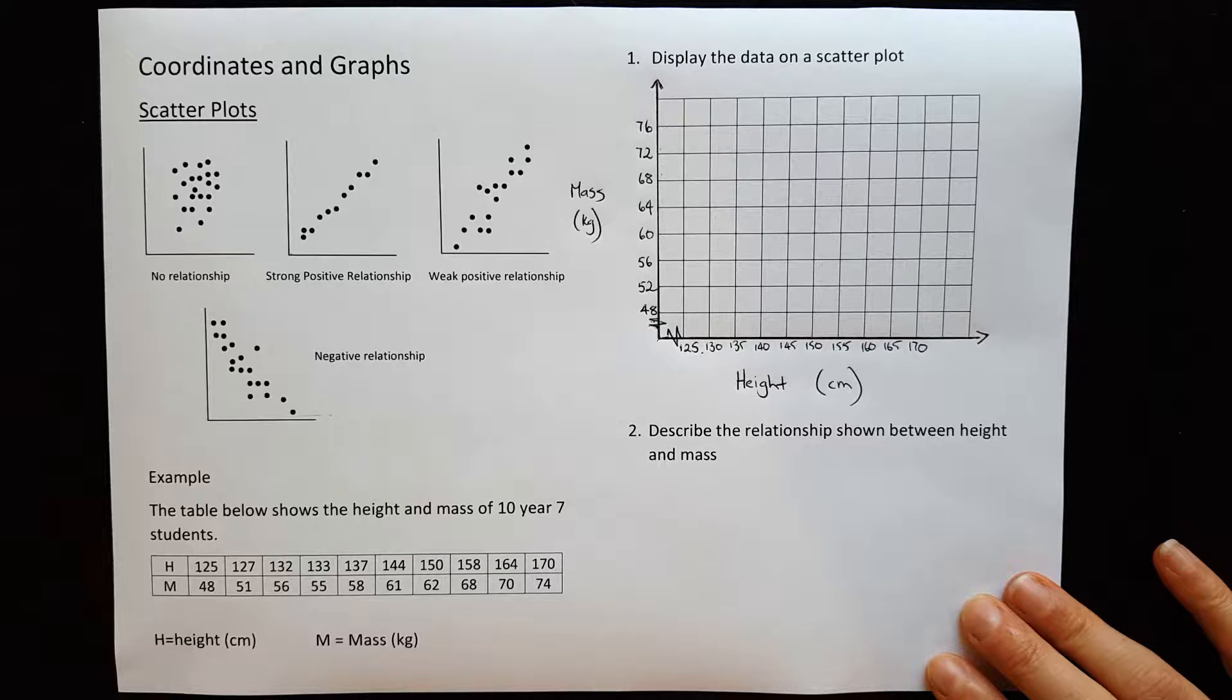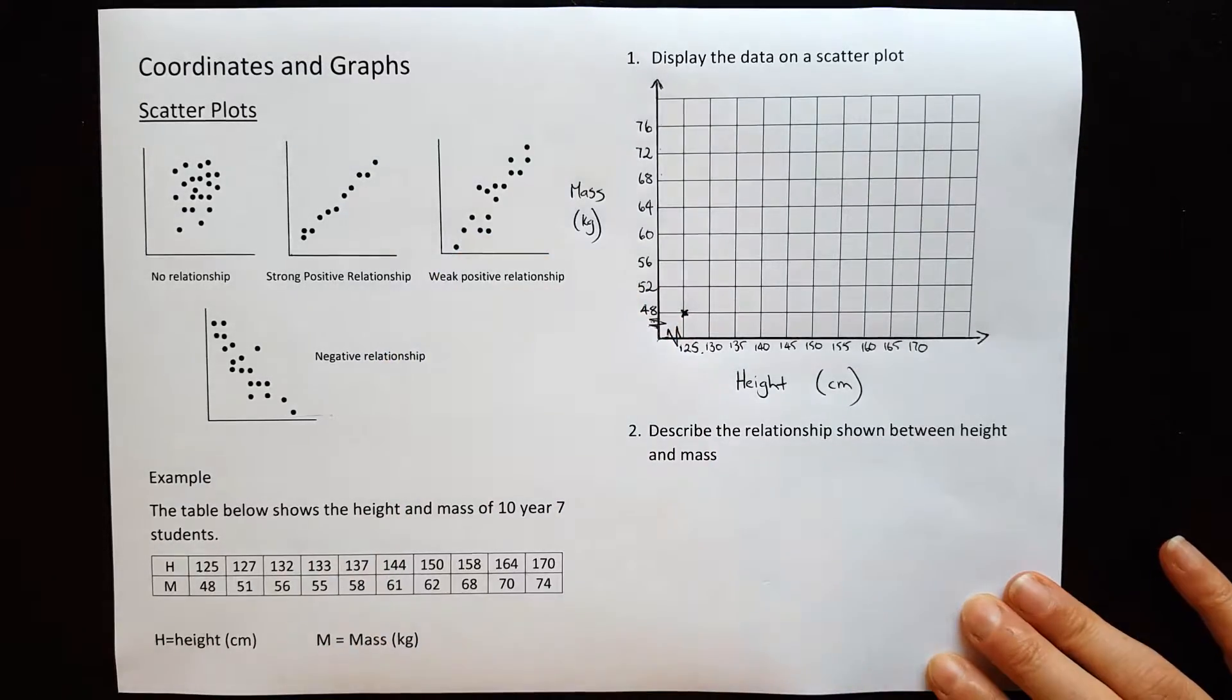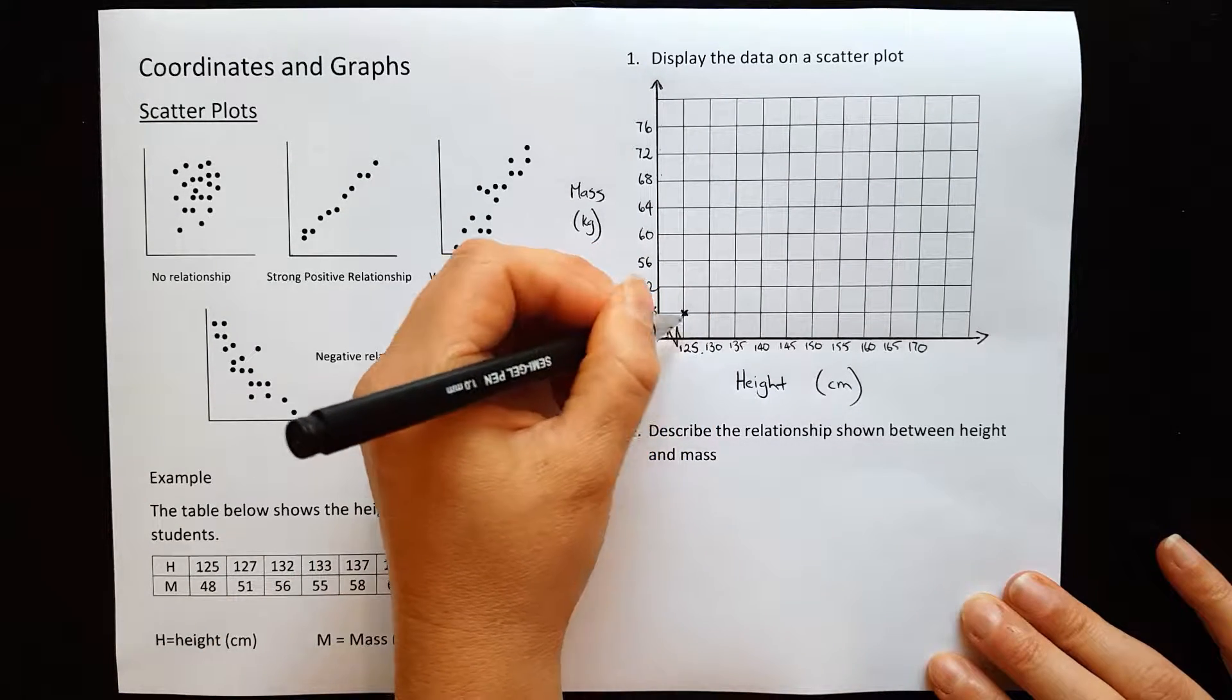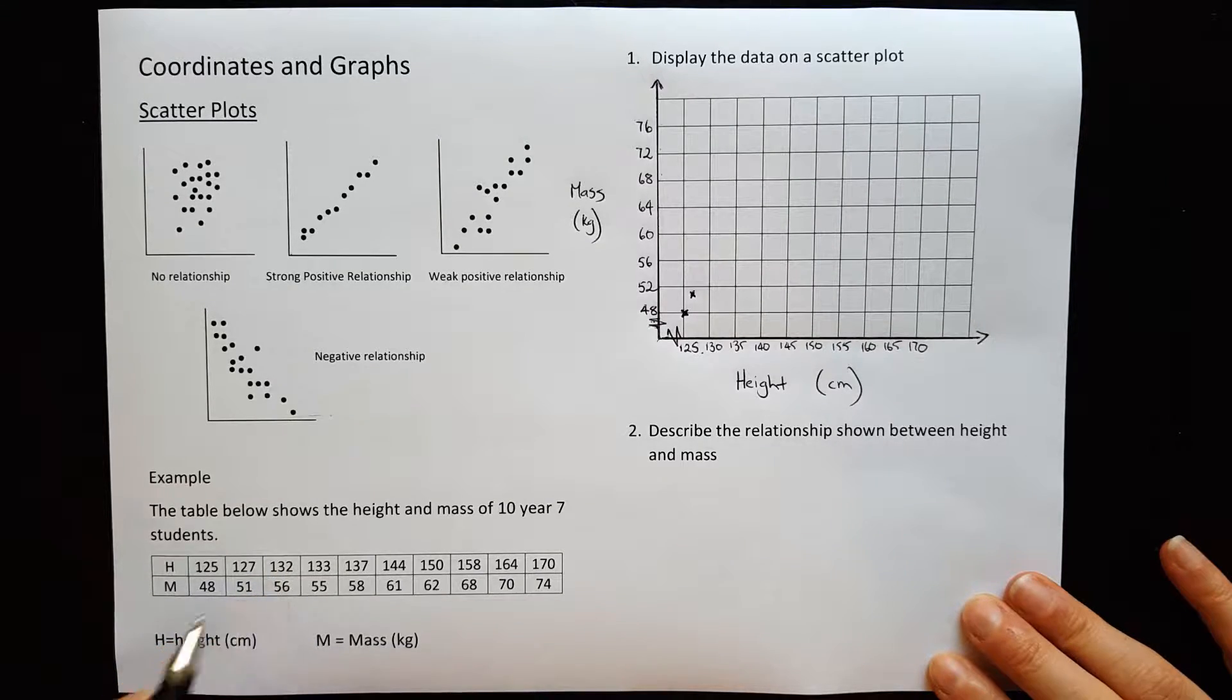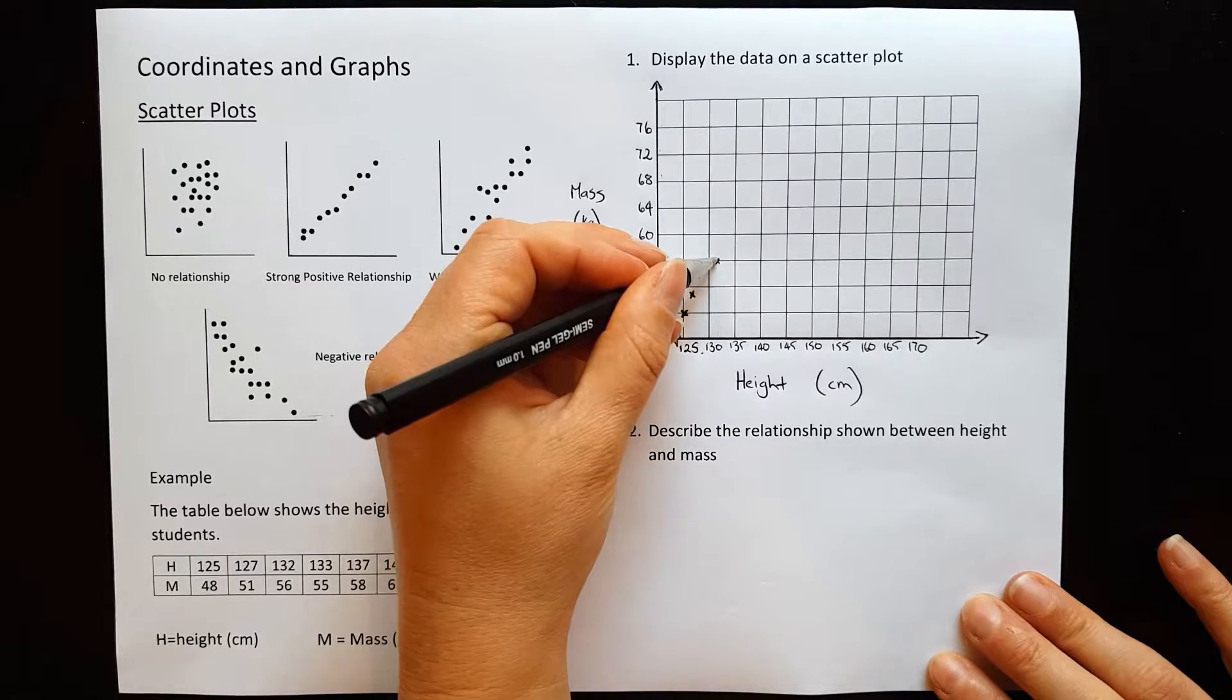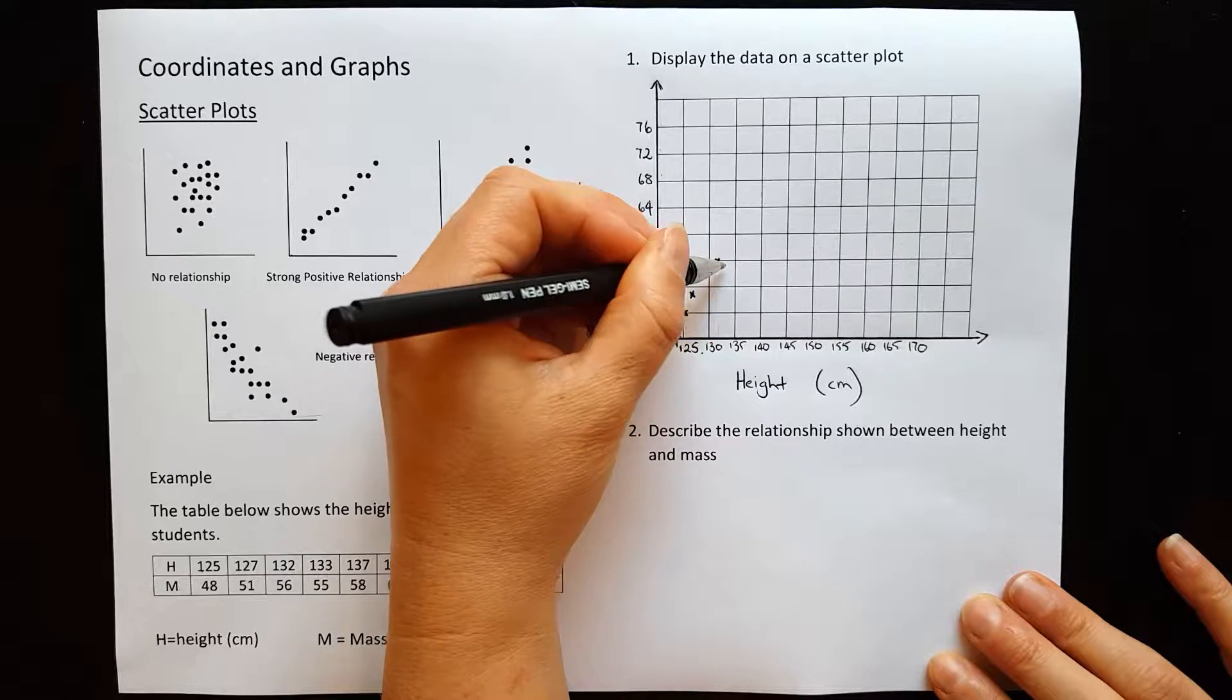All right, so now we can plot our points on there. When the height is 125, the mass is 48. 125 and 48 is right there. So you can do crosses, I like crosses. You can do dots if you prefer. 127 is our next one at 51. 127 about there, 51. So you just need to be as accurate as you can. Next one 132, 56. 132 about here, 56 about there. 133, 55. 133, 55 have actually come down a little bit, about there.